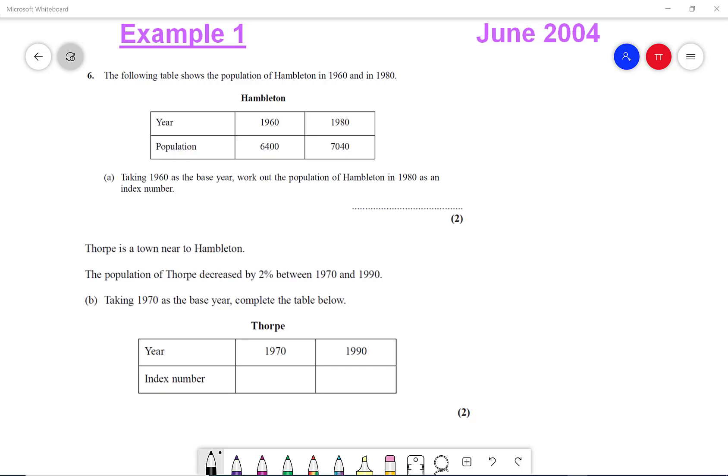In this video we're going to look at index numbers. So what we're going to do is look at this example. It says the table shows the population of Hamilton in 1960 and in 1980.